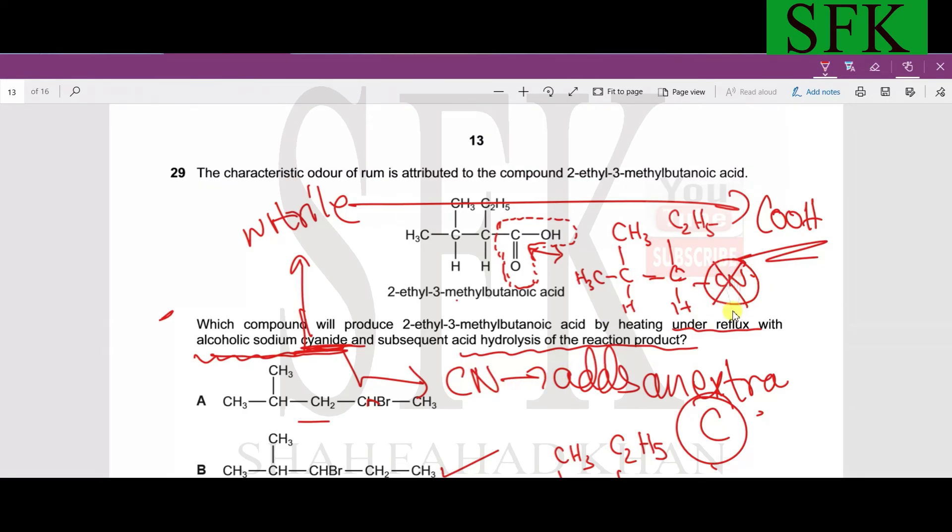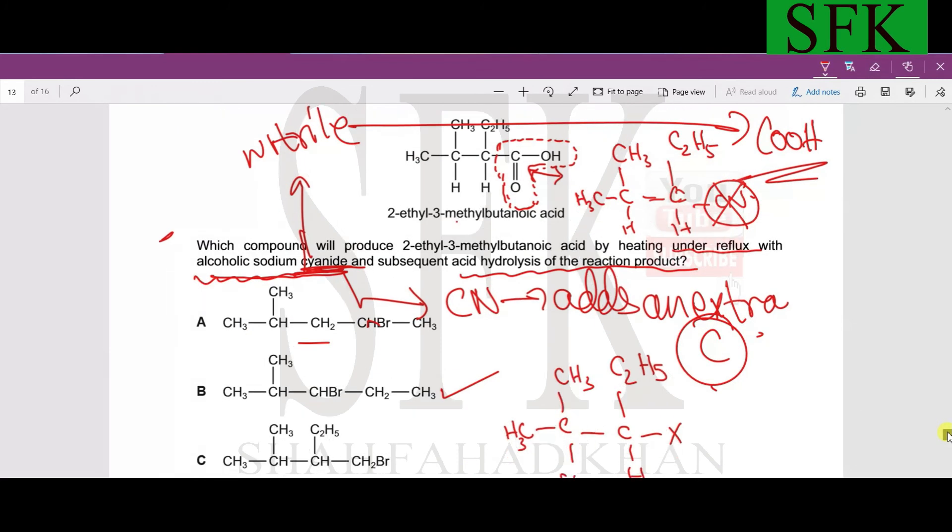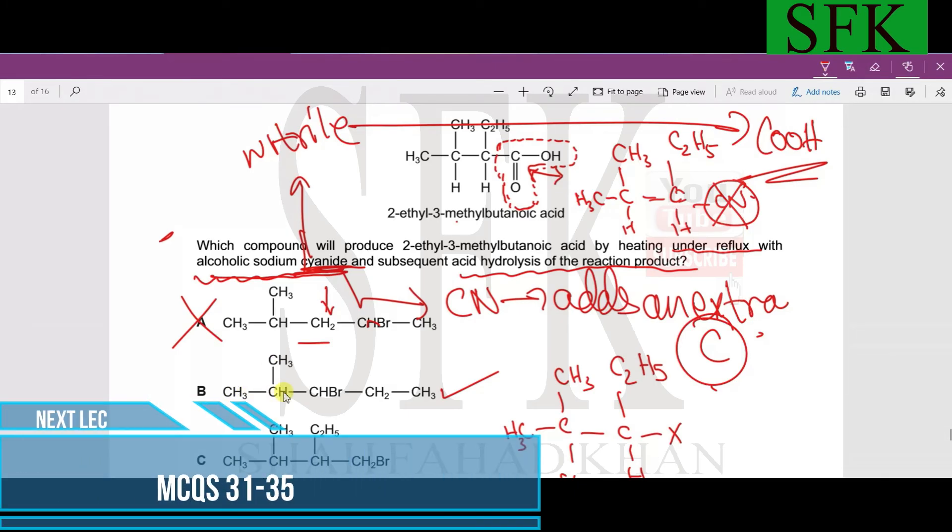Now there must be an answer option that contains some nucleophile instead of CN. If we look at answer option A, this carbon is CH3, CH3 and hydrogen. The next carbon atom is bonded to CH, Br and then CH3. Whereas in here, this carbon atom should have been bonded to a nucleophile, so answer option A cannot be possible.